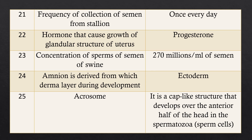Question 24: The amnion is the covering of the fetus. From which dermal layer is the amnion derived during development? Answer: Amnion is derived from ectoderm. Question 25: What is the acrosome? Answer: The acrosome is a cap-like structure that develops over the anterior half of the head in the spermatozoa. The function of the acrosome reaction — which we have already seen — is that it helps in the fusion of sperm and egg.